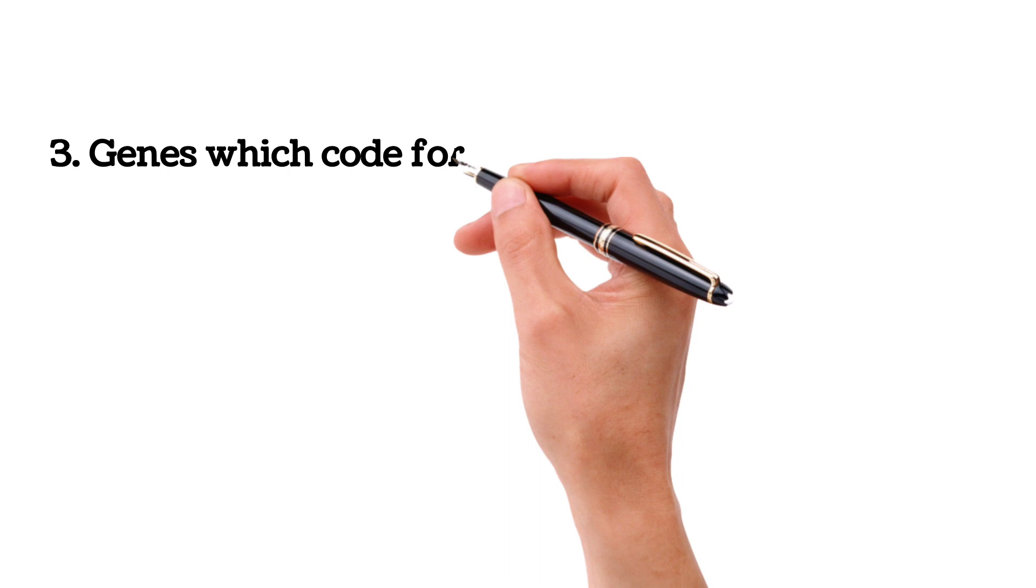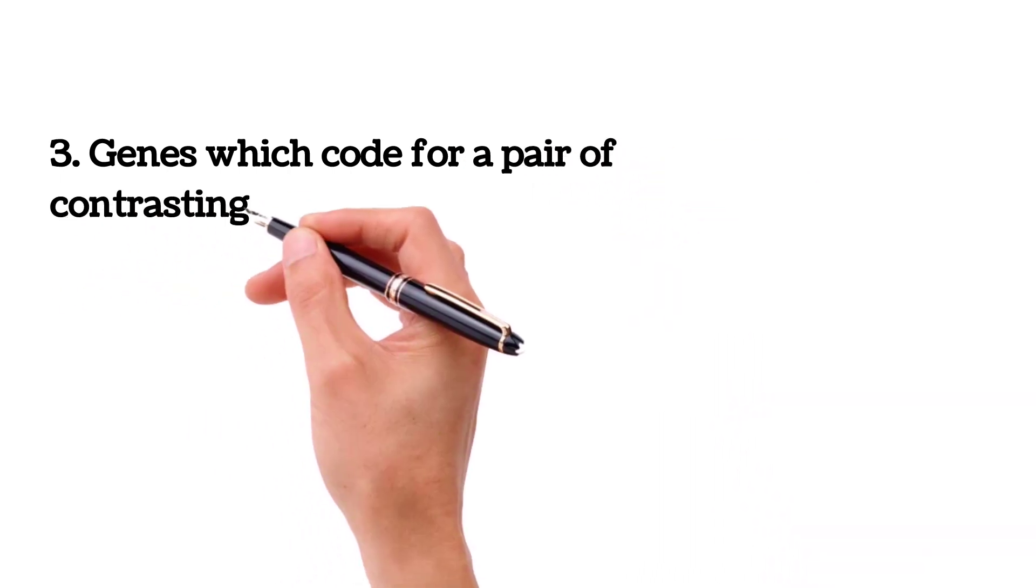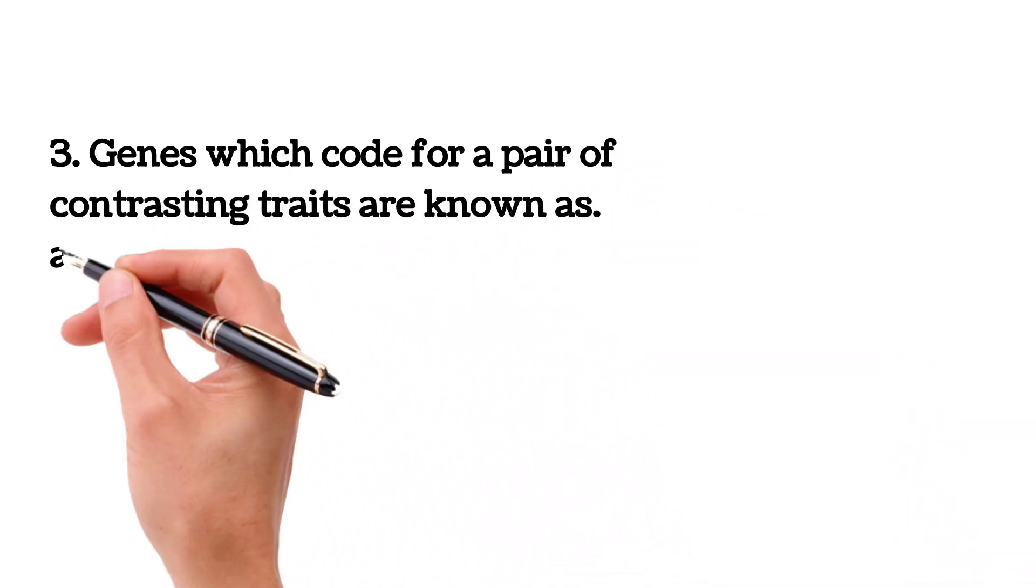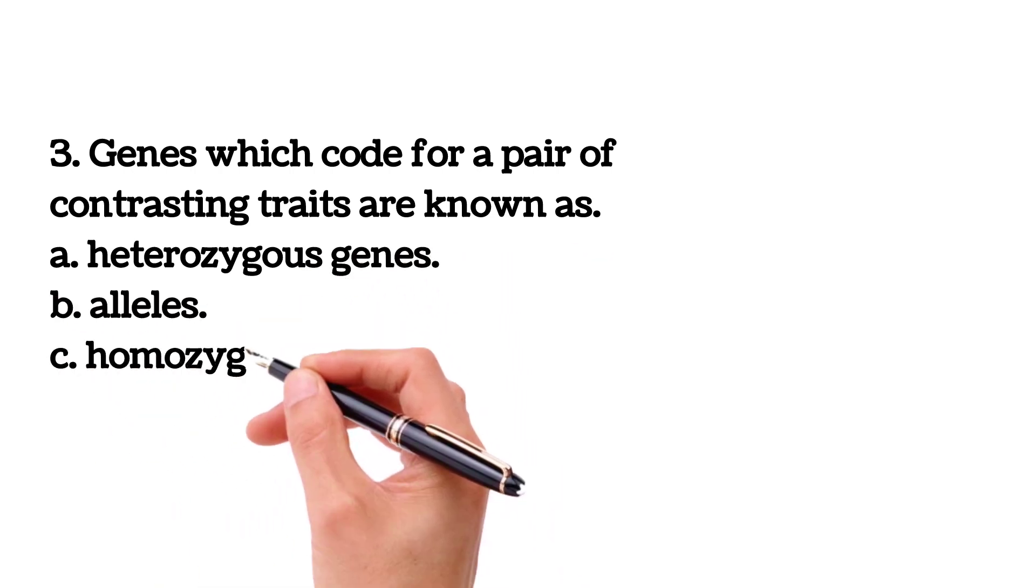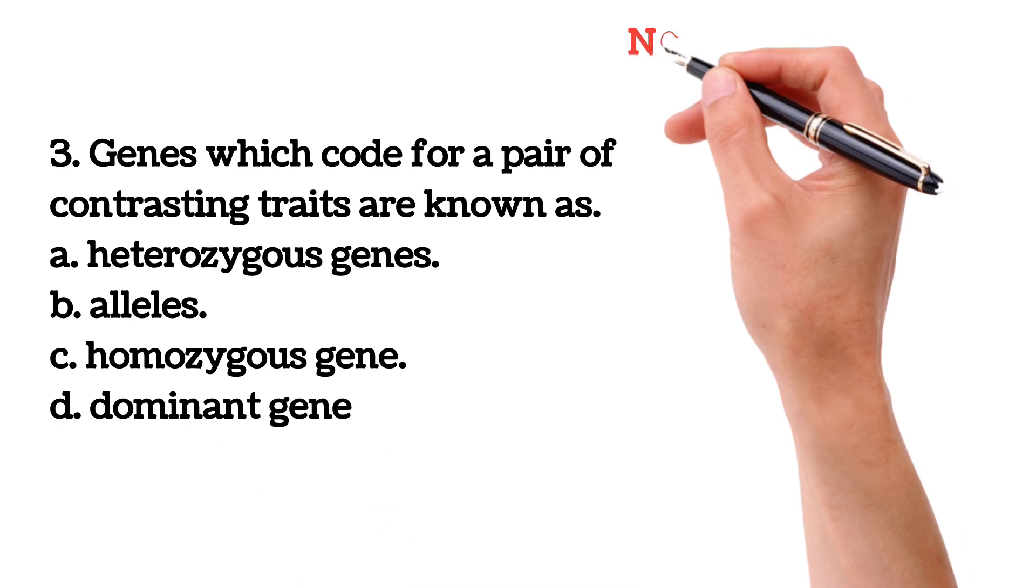Genes which code for a pair of contrasting traits are known as Option A, heterozygous gene, Option B, alleles, Option C, homozygous gene, and Option D, dominant gene.